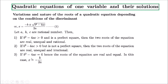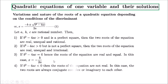When b² − 4ac = 0, the roots of the equation are real and equal. The whole square-root term becomes zero, so x = −b/2a for both roots — they are exactly the same value.